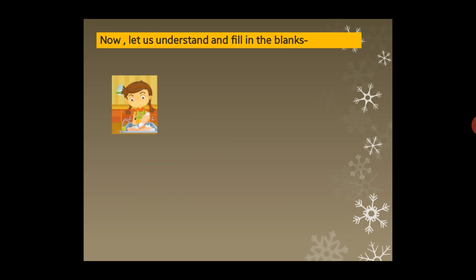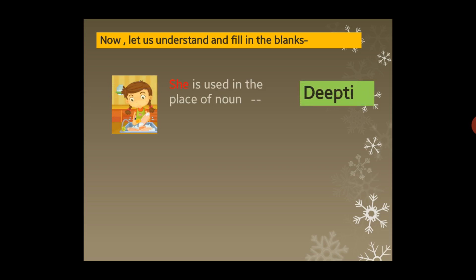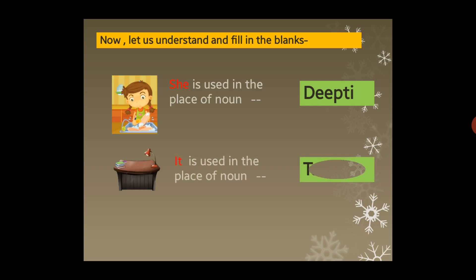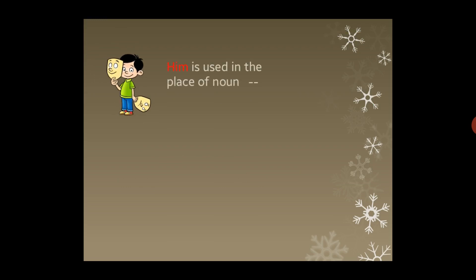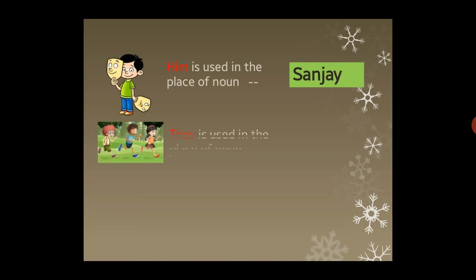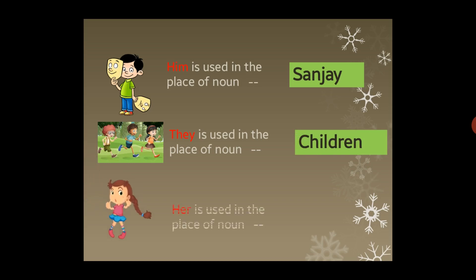Let's review in detail. 'She' is used in place of the noun 'Deepti'. 'It' is used in place of 'table'. 'He' or 'him' is used in place of 'Sanjay'. 'They' is used in place of 'children'. 'Her' is used in place of 'Sudha'. You can copy down these answers in your book.